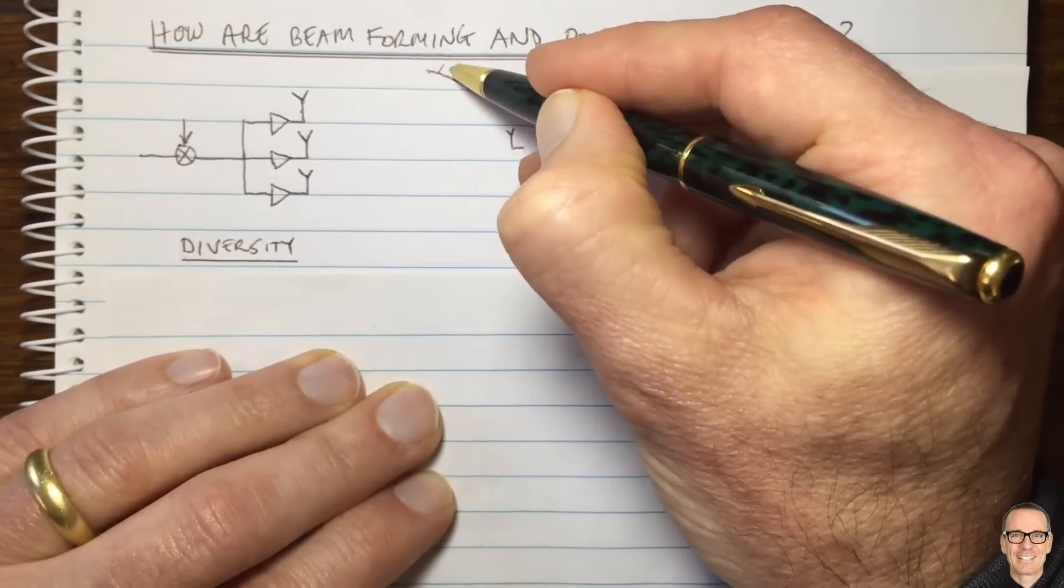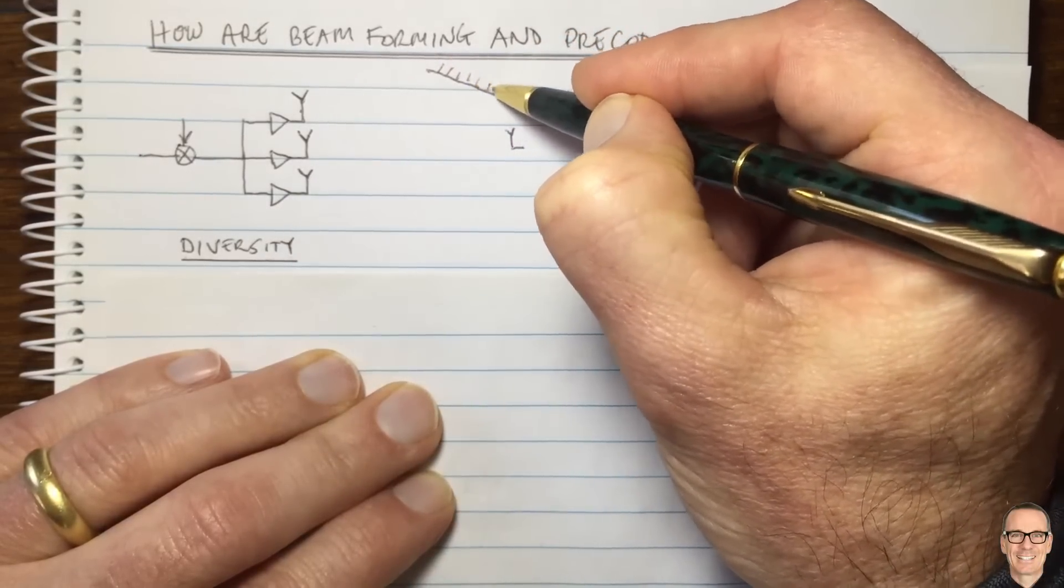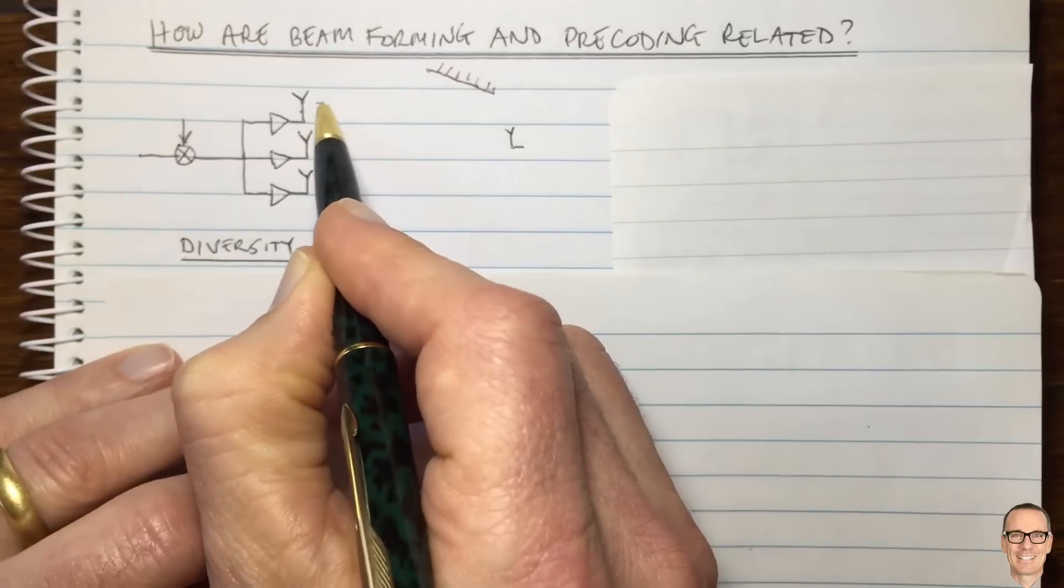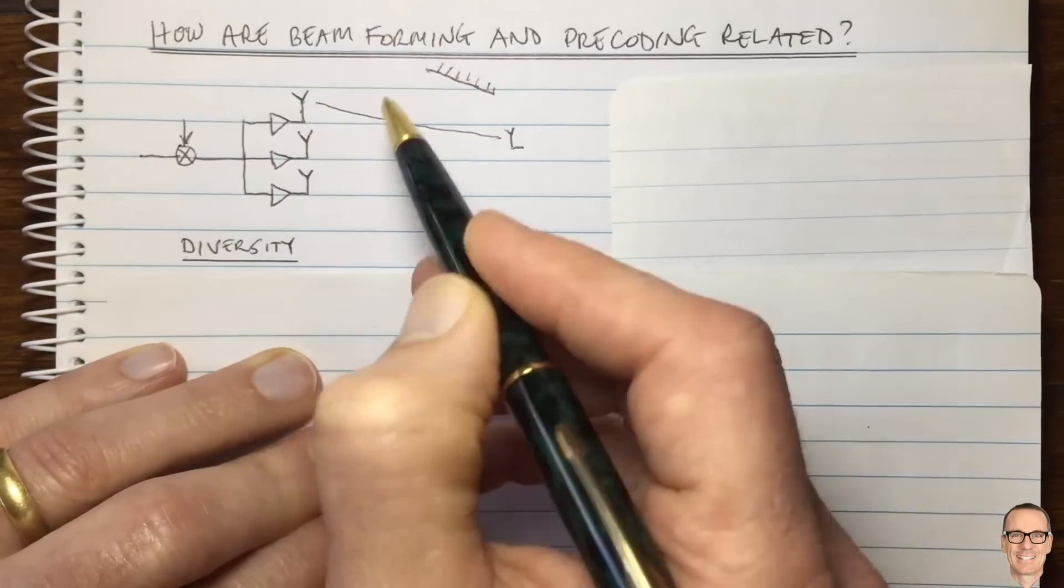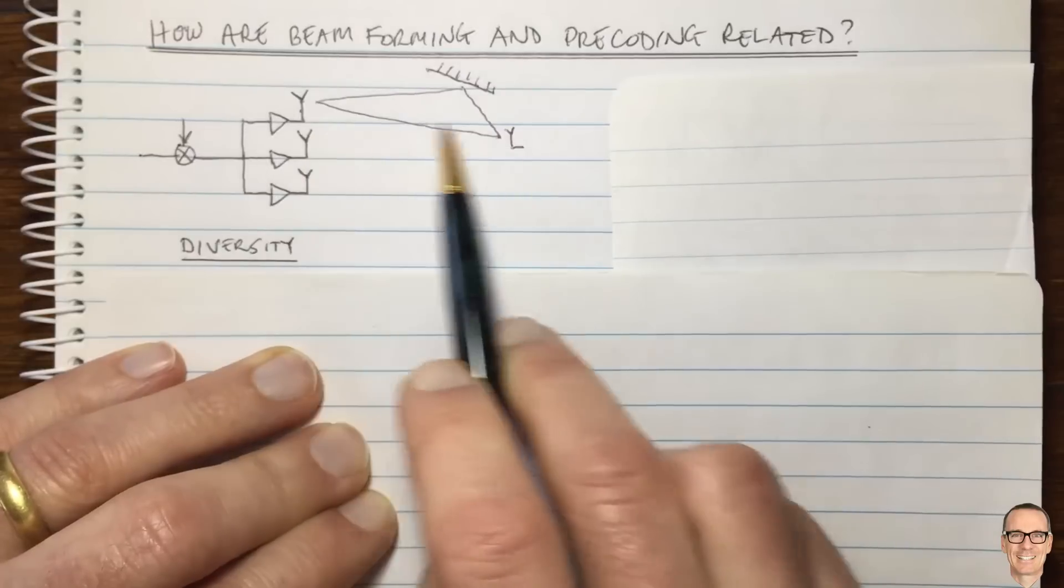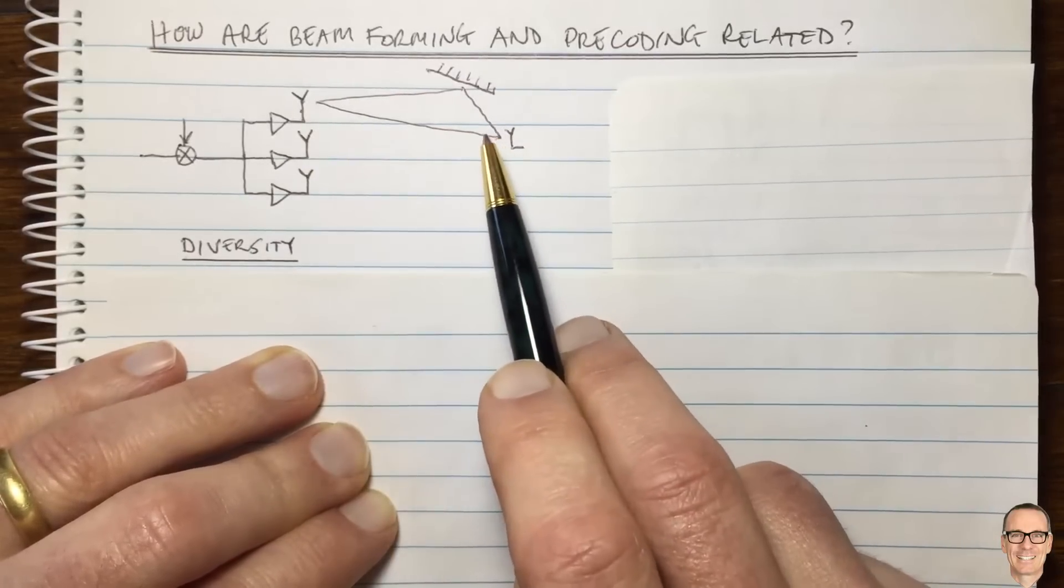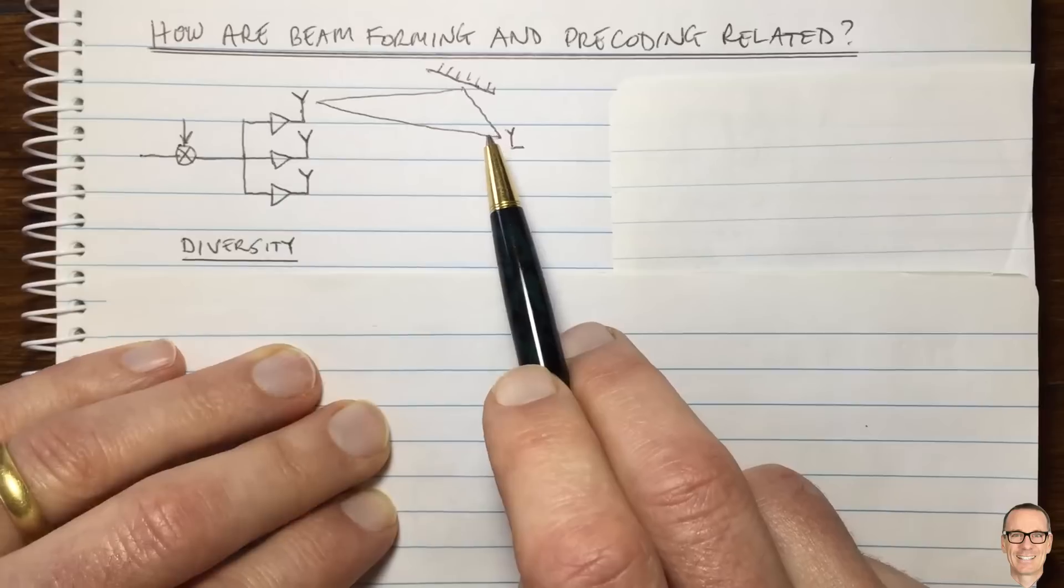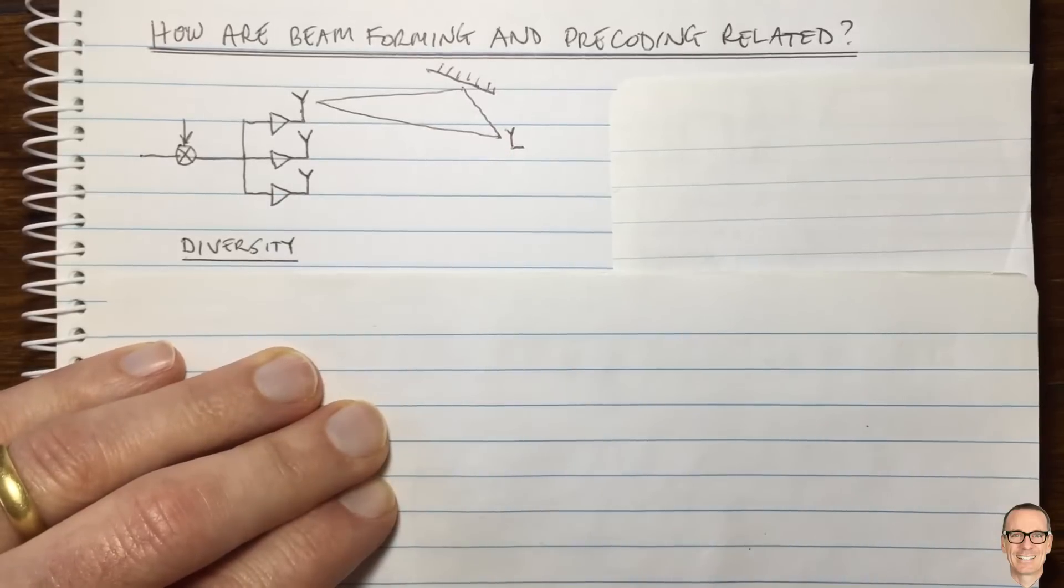If there was a wall that was reflecting the signals and so the direct path comes with one phase and the reflected path comes with another phase, if this arrangement was such that these two paths destructively interfered with each other, they could cancel each other out.